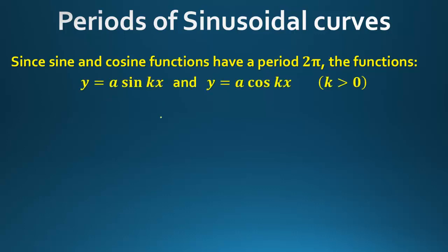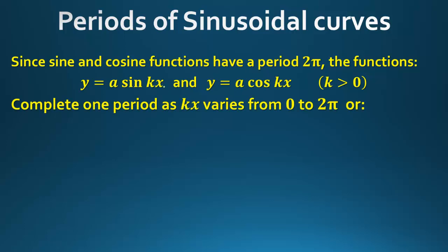The functions y = a·sin(kx) and y = a·cos(kx), where k is greater than zero, complete one period as kx varies from zero to 2π.